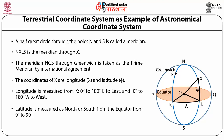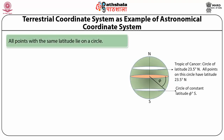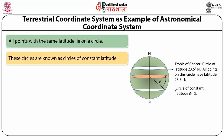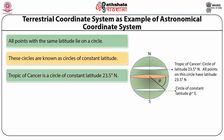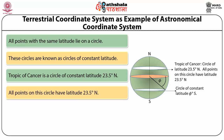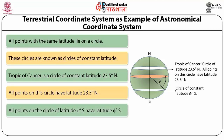Places above the equator lie in the northern hemisphere and places below the equator are in the southern hemisphere. All the points with the same latitude lie on a circle — these circles are known as circles of constant latitude. The Tropic of Cancer is a circle of constant latitude at 23.5 degrees north of the equator; all points on this circle have latitude 23.5 degrees north.